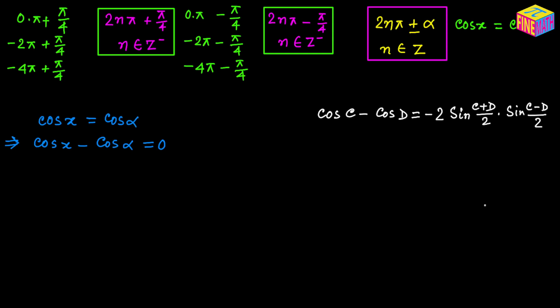I have created a separate video on this formula and shared the link in the description. We are going to use that same formula here because we have the form cosine of something minus cosine of another angle equals 0. We are going to factor it using this formula, and once factored, solving for x is very easy.